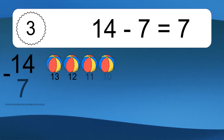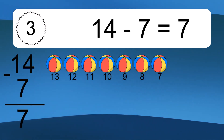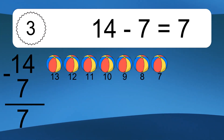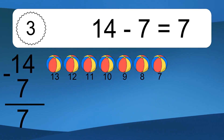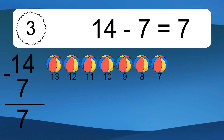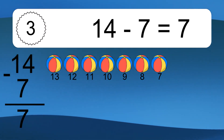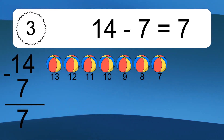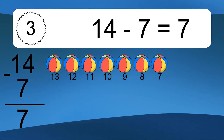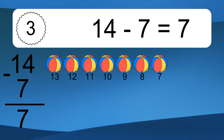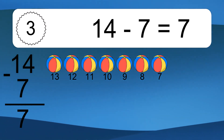14 minus 7 equals 7. Let's count it. 13, 12, 11, 10, 9, 8, 7.